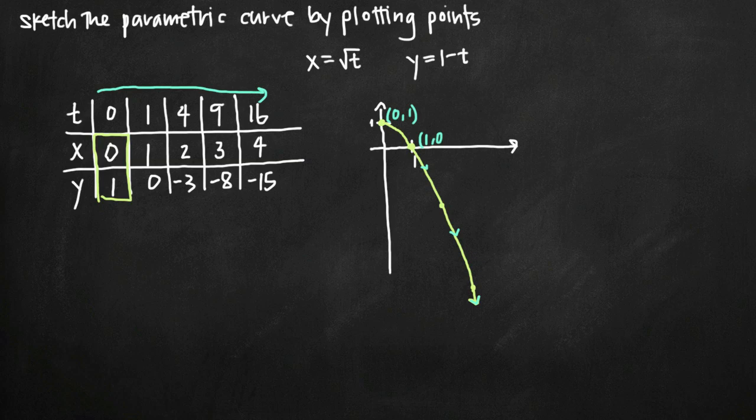Now one way you can check yourself really quickly to make sure that you've graphed the curve correctly, you can eliminate the parameter in these equations and find an equation for y in terms of x. So for example, if we try to solve this equation here, x equals the square root of t, if we solve that for t, then we can plug that into the equation for y and see what we get.